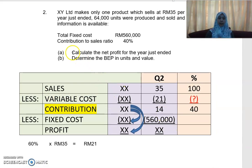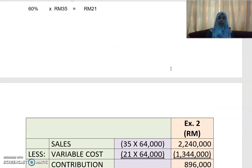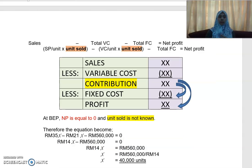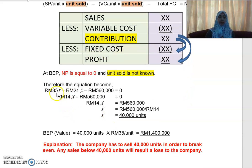That finishes part A. For part B, you need to determine the break-even point in units and value. You can use either the equation method or the contribution method. Using the equation method: total sales minus total variable cost minus total fixed cost equals net profit. At break-even point, net profit is zero, and you need to solve for units sold.